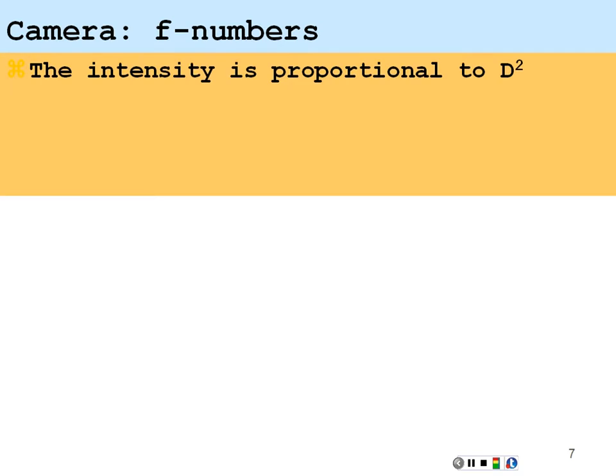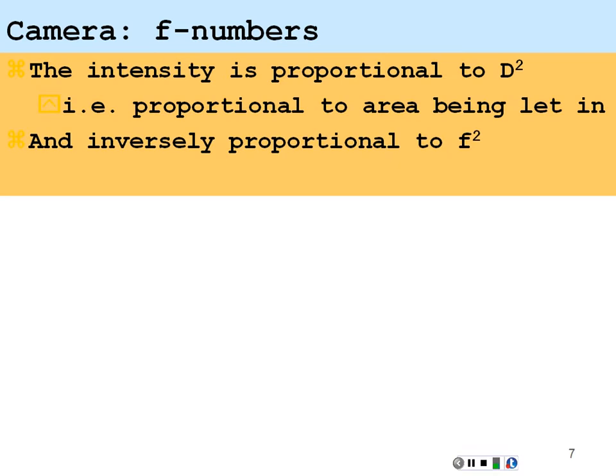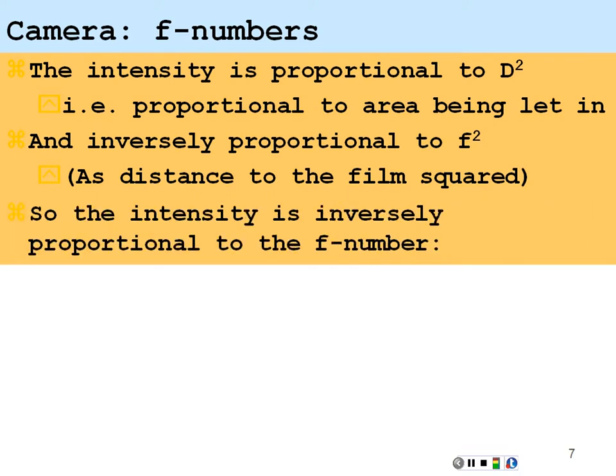The intensity of a camera, the intensity of your setup, is proportional to the diameter of your aperture squared, which indeed is being proportional to the area allowing the light coming in, and inversely proportional to your focal length squared, as the distance to the film squared. So we have what we call an F number, which is equal to your focal length divided by the diameter of your lens. And your intensity will be inversely proportional to this number. As your F number gets larger, the amount of darkness in your image will get larger as well. In other words, a low F number will have a brighter image. A higher F number will be a darker image.